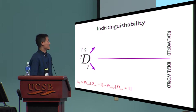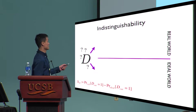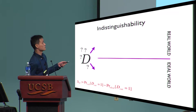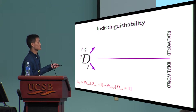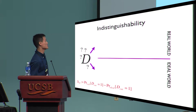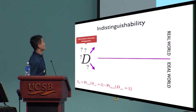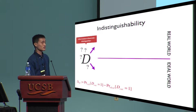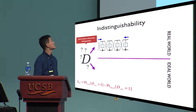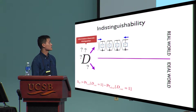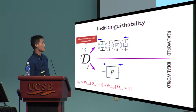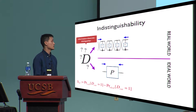Let's take a look at the classic indistinguishability experiment. We have a distinguisher interacting with one of two worlds. Its advantage is defined as the difference in the probability of the distinguisher outputting one in the two worlds. We assume the distinguisher is information-theoretic, meaning it has unbounded computational power but a limited number of queries to its oracles. In the real world, it interacts with the Feistel network, and in the ideal world, it interacts with a random permutation.